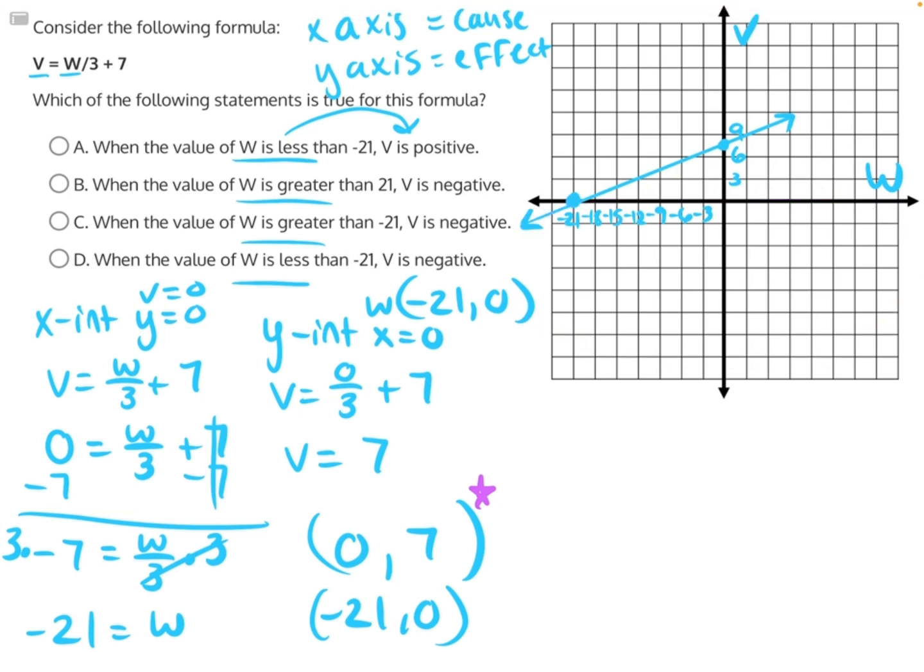So I can write two statements. One that says when w is greater than negative 21, then v is going to be positive. But on the other side, when w is less than negative 21, v will be negative.